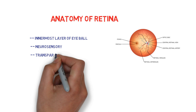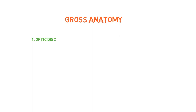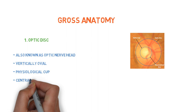Let's talk about the gross anatomy of the retina. The first topic is the optic disc, also known as the optic nerve head, which is pink in color and a well-defined, vertically oval area. A depression seen in the disc is called the physiological cup. The central retinal artery and vein emerge through the center of this cup.